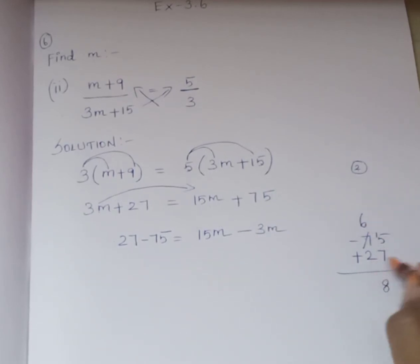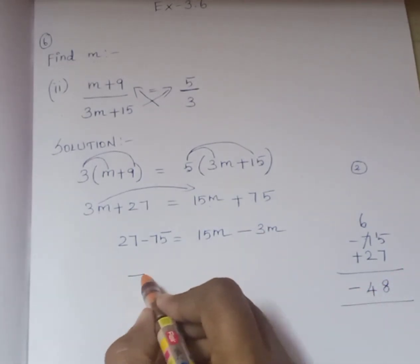6 minus 2 is 4. We have to subtract. When you have different signs, we subtract the numbers and write the bigger number's sign. Which is the bigger number? 75. The bigger number's sign is minus. So what is the answer? Minus 48.